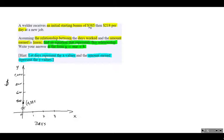Now on day one, at the end of day one, how much has this welder earned? Well, 385 to start with and then another 218. So if we add those two values together, we get a total of 603. So on day one we can come up here and we can plot a point, maybe right about there. And we can call that 1, 603.